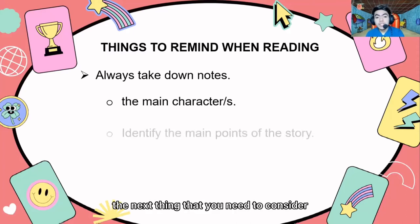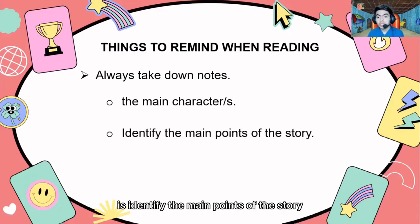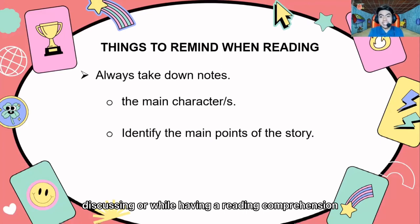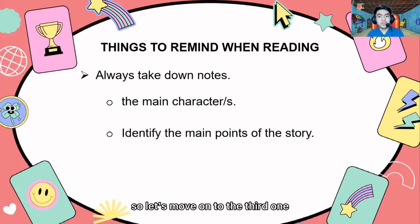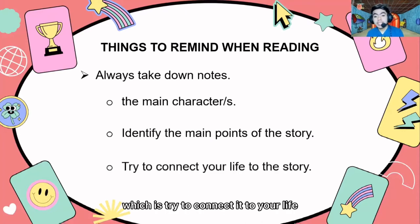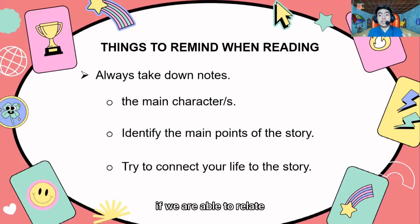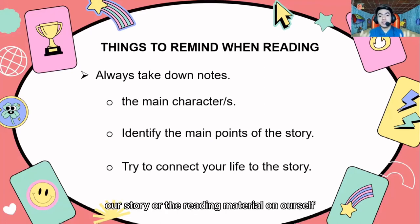The next thing you need to consider is identifying the main points of the story. We will have a better clarification and deeper understanding with that as our second reminder while having a reading comprehension. The third one is to try to connect it to your life. We need to connect the story to our own life in order to have a relatable context. If we are able to relate the reading material to ourselves, we could have a better understanding towards it.